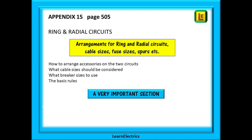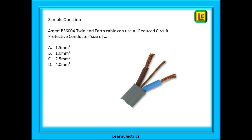Appendix 15 is important. It is all about ring and radial circuit arrangements — how to arrange accessories on the two types of circuits, what cable sizes should be considered, what breaker sizes to use. The basic rules, floor area, cookers on ring circuits etc. are here, and do expect a question on appendix 15. Try this question: 4mm BS 6004 twin-and-earth cable can use a reduced circuit protective conductor size of — and the answer is on one of the pages somewhere; you just need to find it.